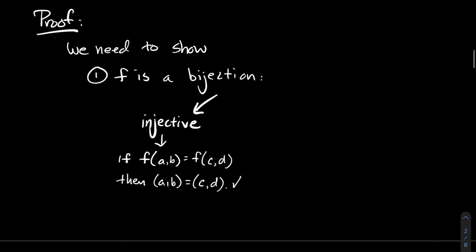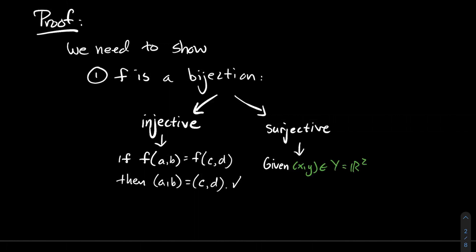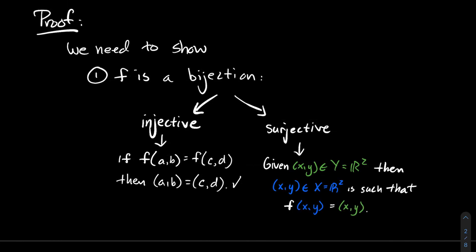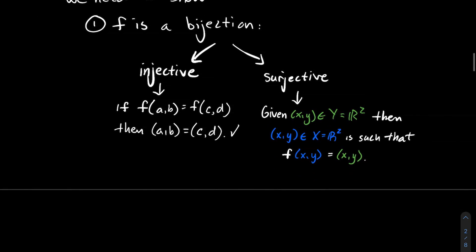For surjectivity, take any point (x, y) in the codomain Y. Consider that same point living in the domain — F sends it to that same point in the codomain. So every point in the codomain is in the range, meaning the range equals the codomain. That's surjective, or onto.